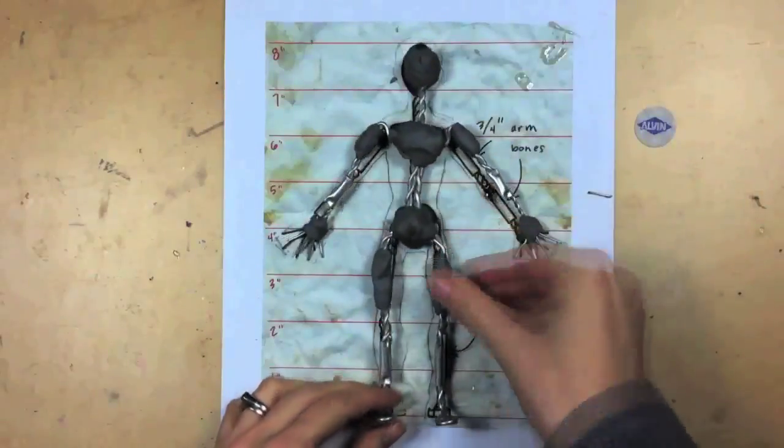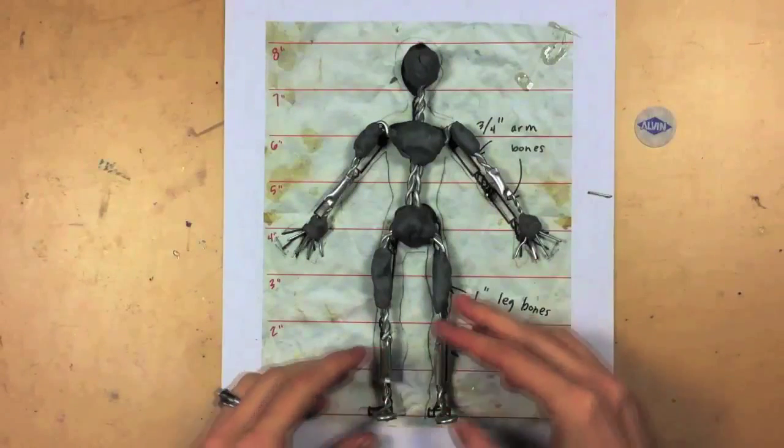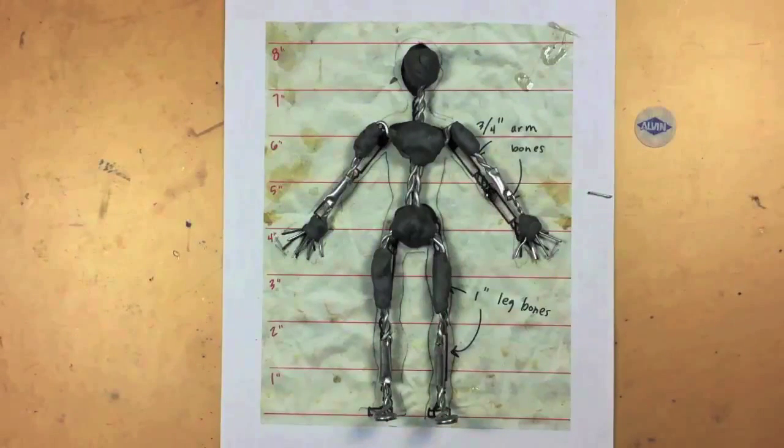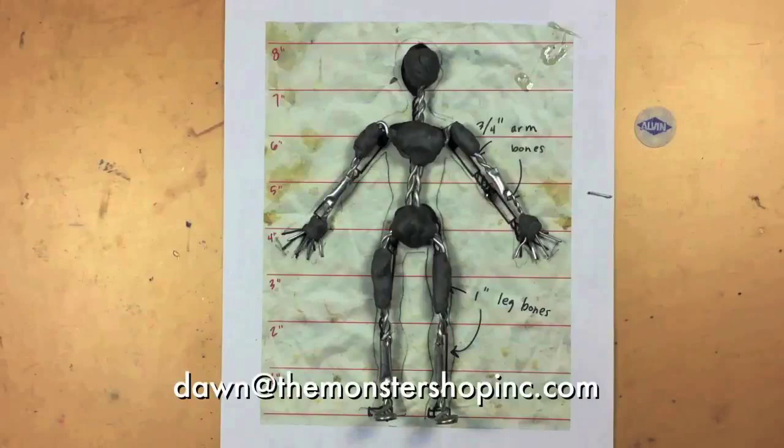And that's it! One aluminum wire armature, ready for foam latex. If you have any questions, please send me an email.